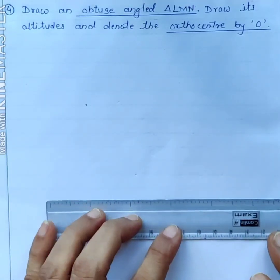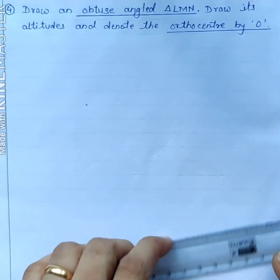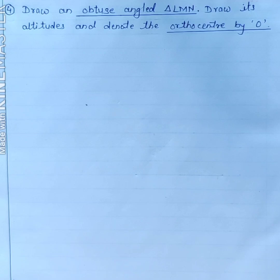Question number 4 from practice set 4.1: draw an obtuse angled triangle LMN, draw its altitudes and denote the orthocenter by O.